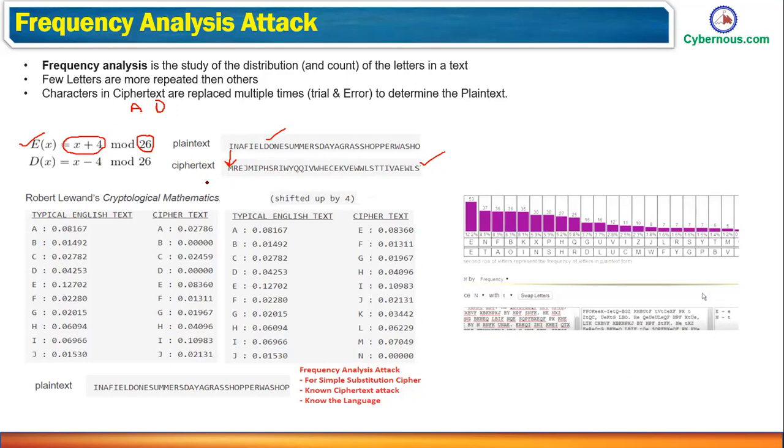Now, in English language, as you know, few characters are repeated more than others. And we are making use of the same thing here. Attackers make use of the same thing and try to generate some kind of pattern. For that, there is some kind of cryptanalytical mathematics which was brought in by Robert Lowland and that is where you can see this.